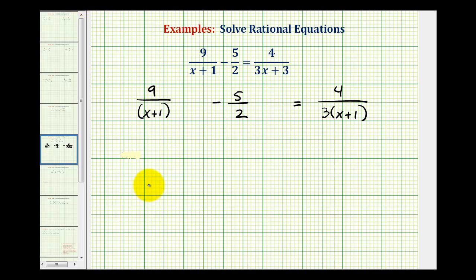Now looking at the denominators, notice how the LCD would have to contain a factor of 2, a factor of 3, and a factor of x plus 1. So 2 times 3 times x plus 1, the LCD would be 6 times the quantity x plus 1.